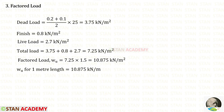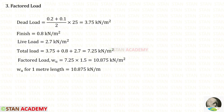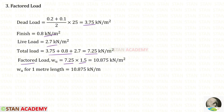Now we are going to find the factored load. First we need to find the dead load. That will be the overall depth D into the unit weight of concrete, 25 kilonewton per meter cube. The overall depth D changes from 200 millimeter to 100 millimeter, so for D we take the average and convert both to meter. For the dead load we will get 3.75 kilonewton per meter square. The finish and live load are given in the question. When we add these three we get the total load, and multiplying with 1.5 gives the factored load. For 1 meter length, we will get 10.875 kilonewton per meter.